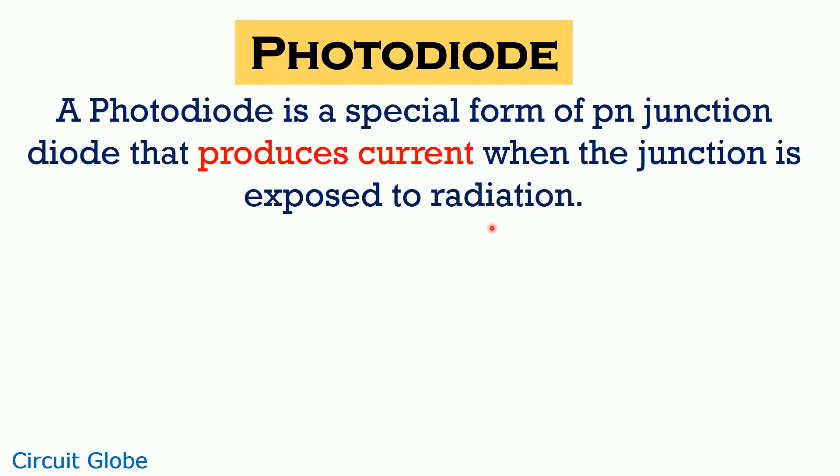Now let's have a look at the symbol of photodiode. In the symbolic representation of photodiode, the two inward arrows represents its exposure to radiation.